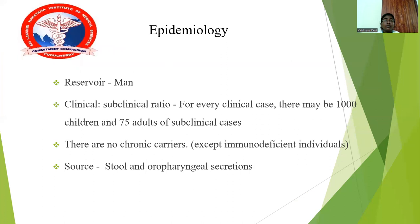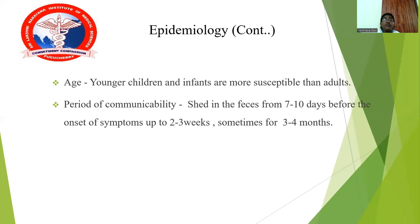Regarding epidemiology, the reservoir is humans. The clinical to subclinical ratio is: for every clinical case, there may be 1000 subclinical cases in children and 75 in adults. There are no chronic carriers except immunodeficient individuals. The source is stool and oropharyngeal secretions. Younger children and infants are more susceptible than adults. The period of communicability extends from 7 to 10 days before onset of symptoms up to 2 to 3 weeks, and sometimes 3 to 4 months.